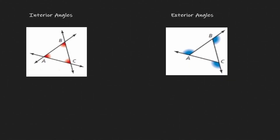When it comes to angles there are two classifications that we can have: interior angles and exterior angles. Let's discuss interior angles first. So here we have an illustration of a triangle — let's call it ABC. The interior angles are the angles inside the triangle, which in this case are angle A, angle B, and angle C.